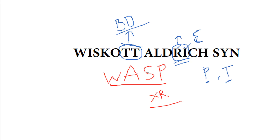These three are the triads of Wiscott-Aldrich syndrome: thrombocytopenia, recurrent infections, and rash which is itchy and is called eczema. Thank you, please subscribe if you like the video.